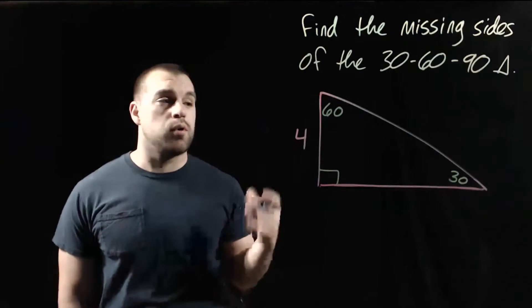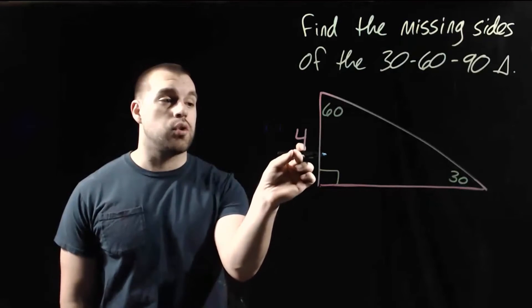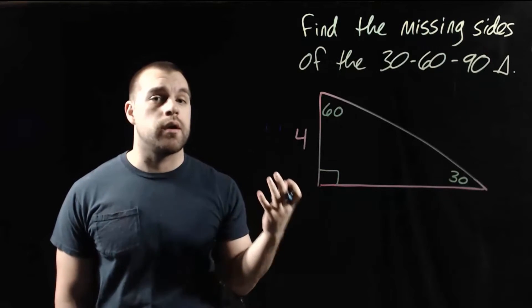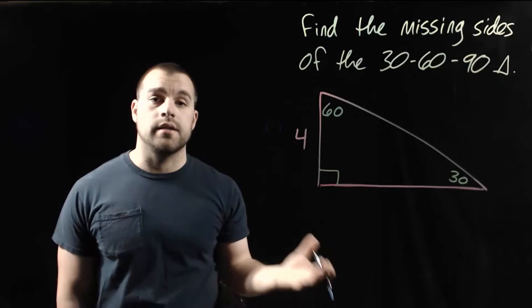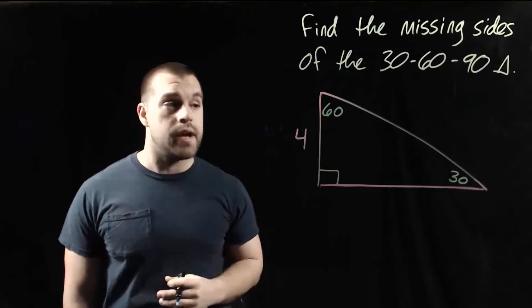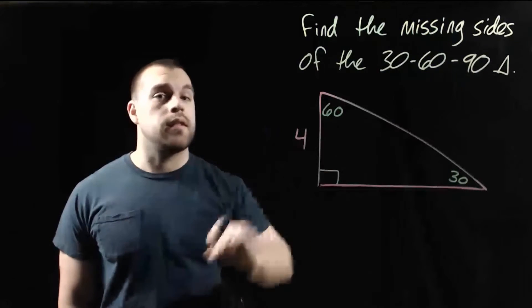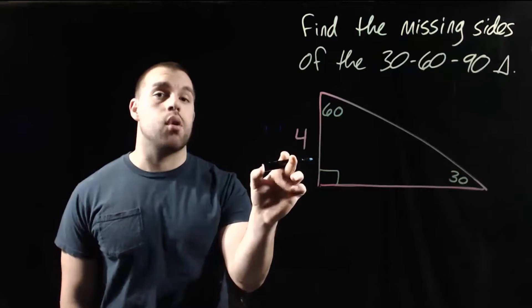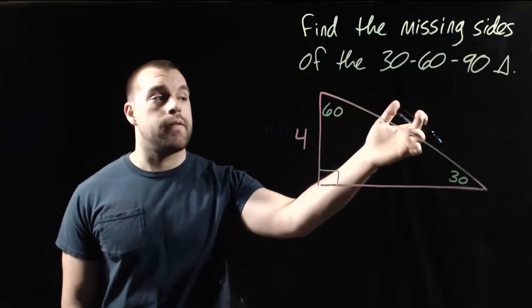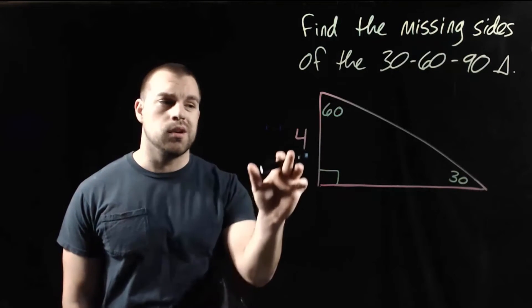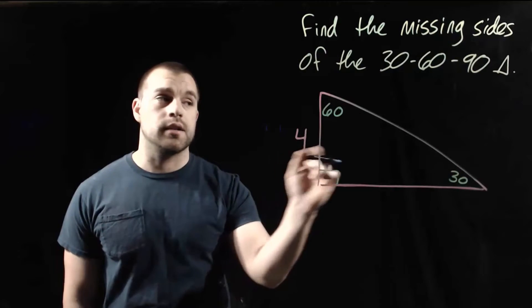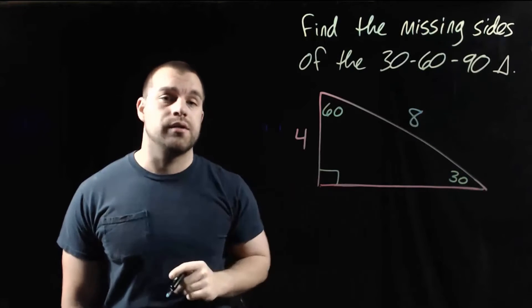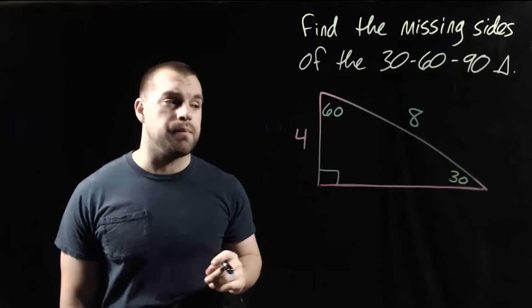In this example, we're given the shortest leg across from the 30-degree angle, and we want to find the lengths of the two missing sides. I'm going to start by finding the length of the hypotenuse. If we have the short leg, we multiply by 2. So if the short leg is 4, the hypotenuse is going to be 8, because we're just doubling it.